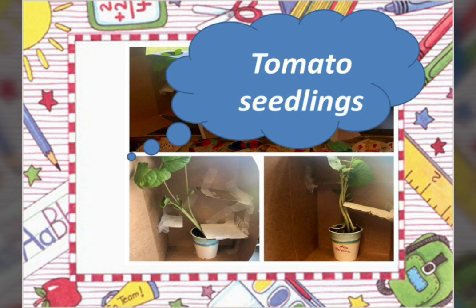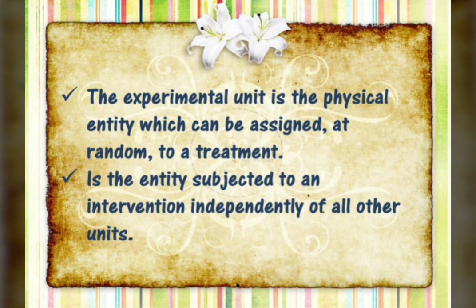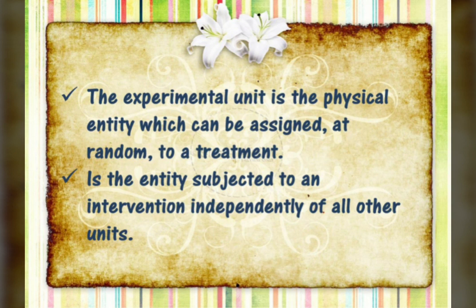What is an experimental unit? In this experiment, the experimental unit is the tomato seedlings. The experimental unit is the entity subjected to an intervention independently of all other units. Commonly, it can be an animal, person, or product. Different experimental units must be capable of receiving different experimental interventions — failure to correctly identify the experimental unit is a common mistake that can result in incorrect conclusions. The experimental unit is also the physical entity which can be assigned at random to a treatment, and it is the unit of statistical analysis.